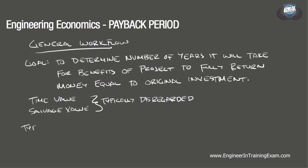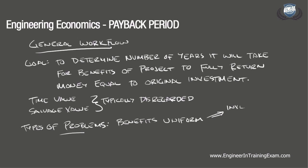There are a couple of ways that we may see these problems written. One way would be when the benefit cash flow stream is uniform. In this case, all that needs to be done is to simply divide the initial investment by the uniform annual benefits. This will give you the payback period.